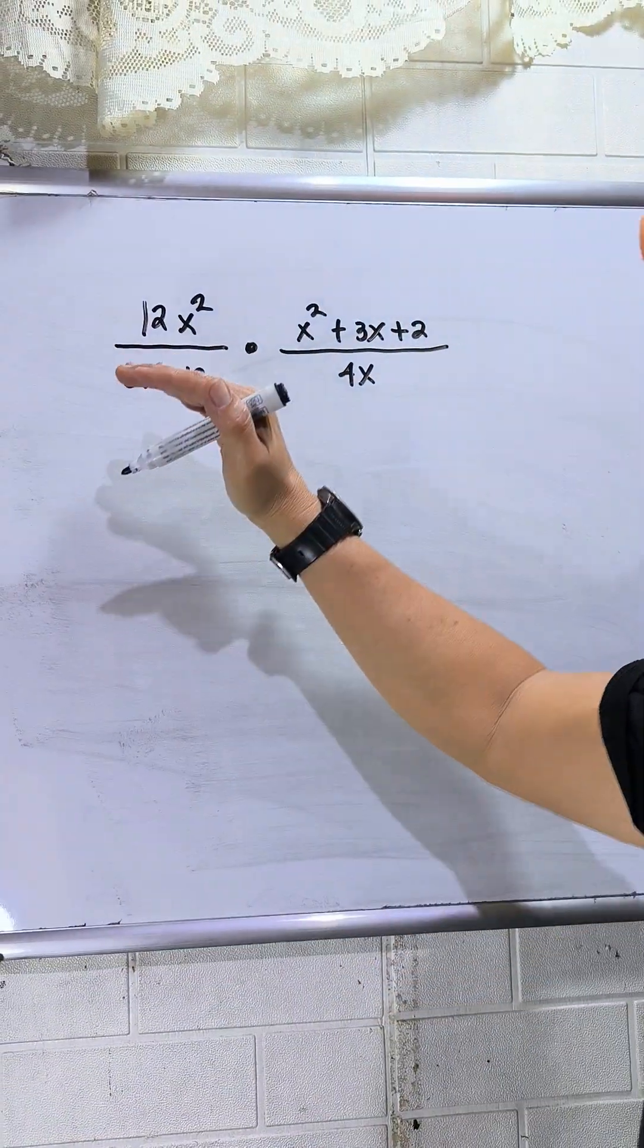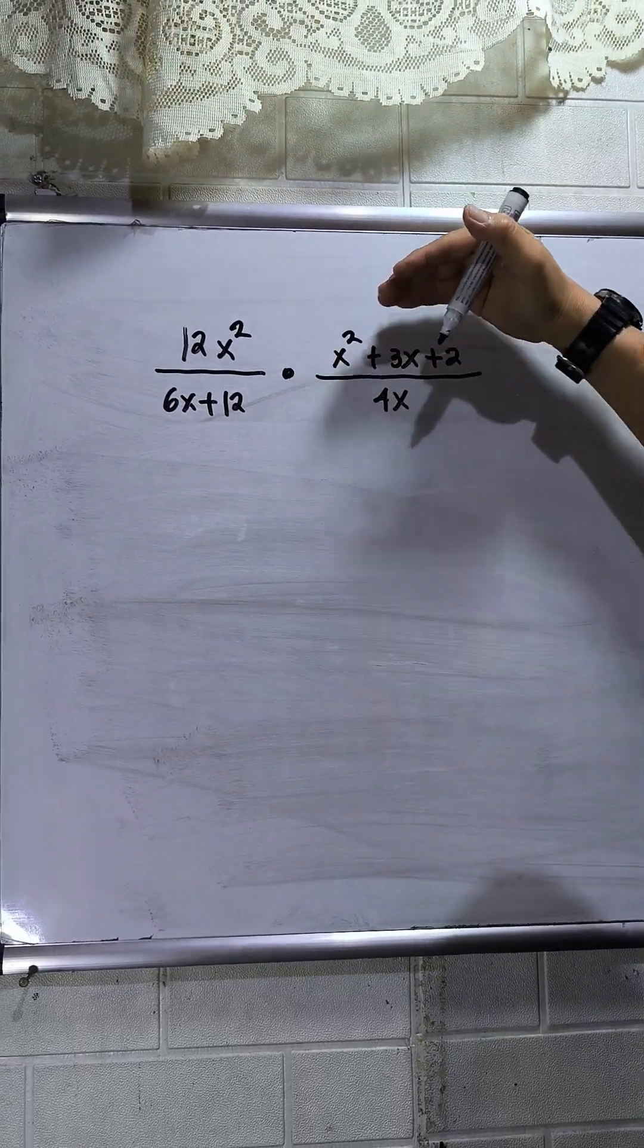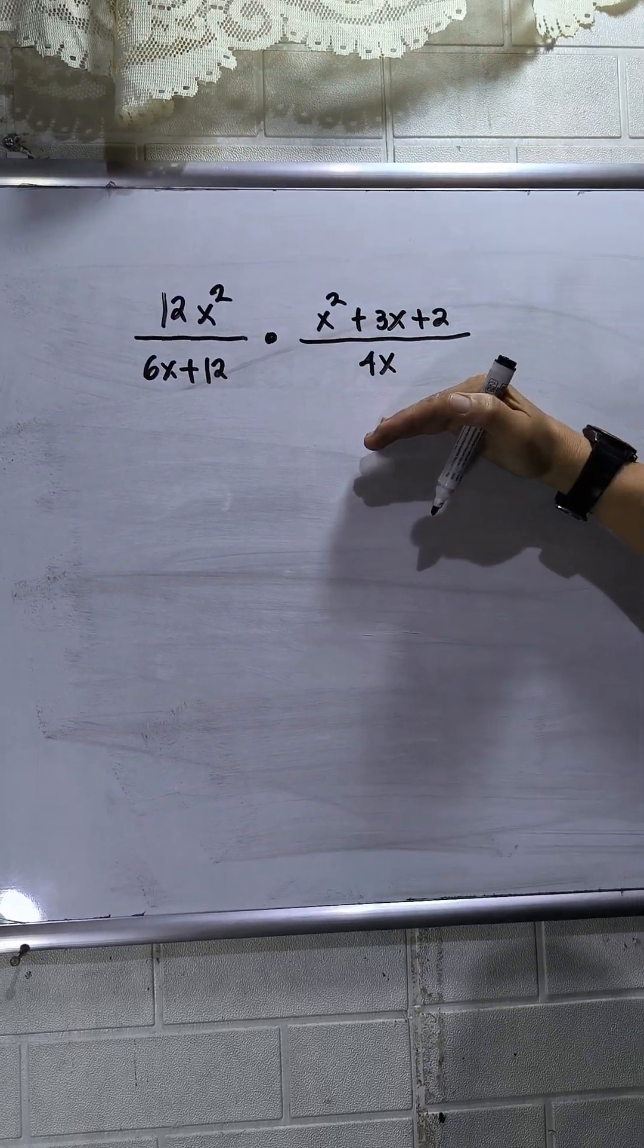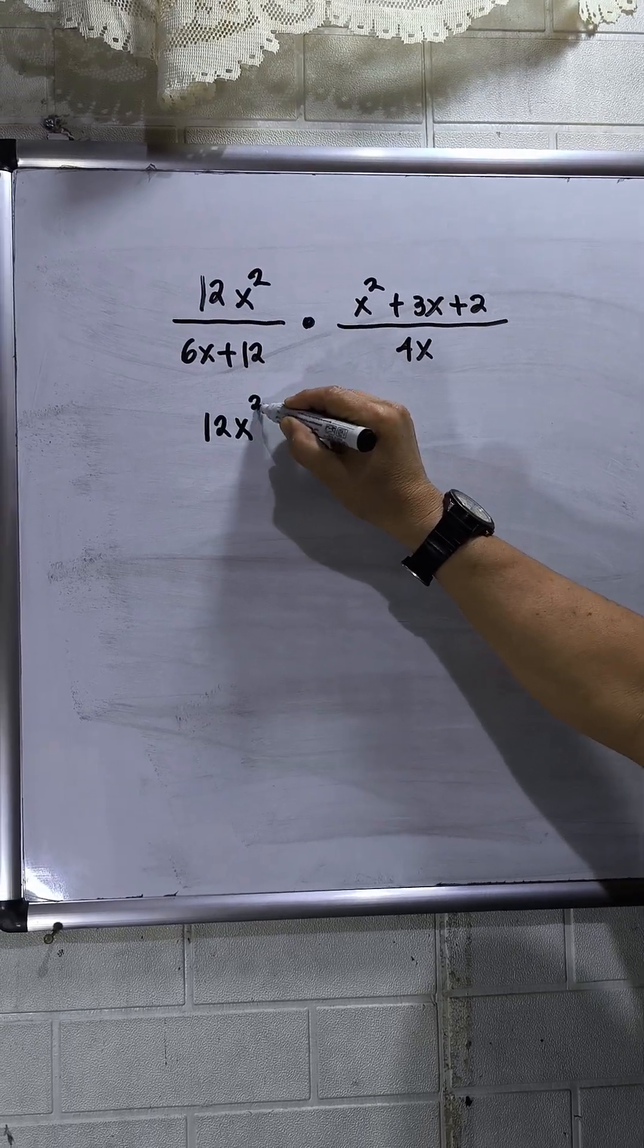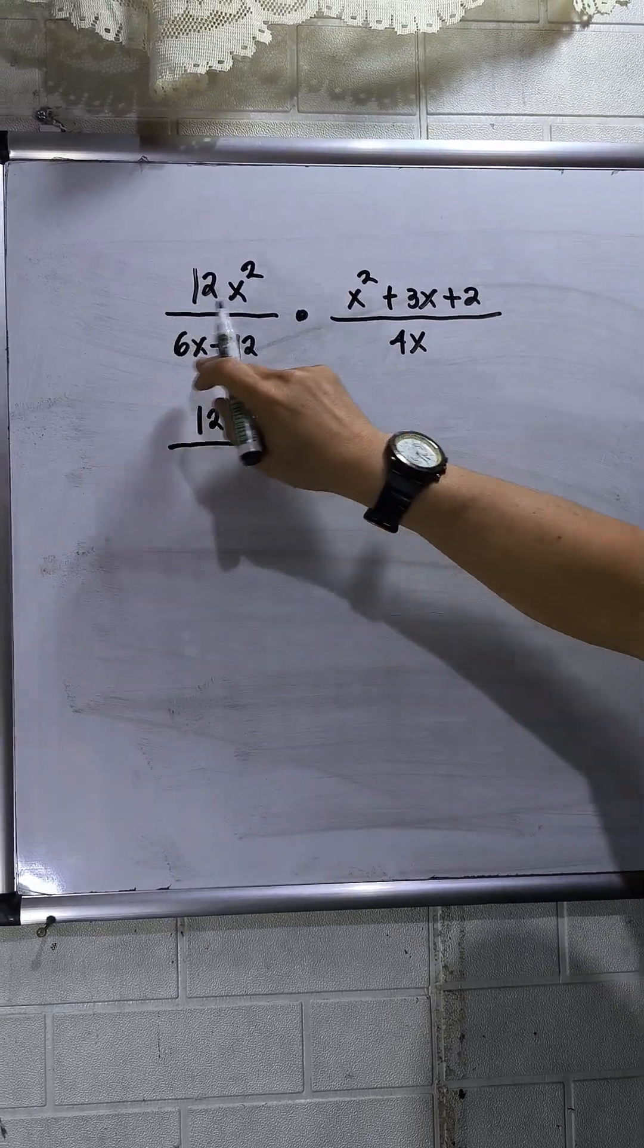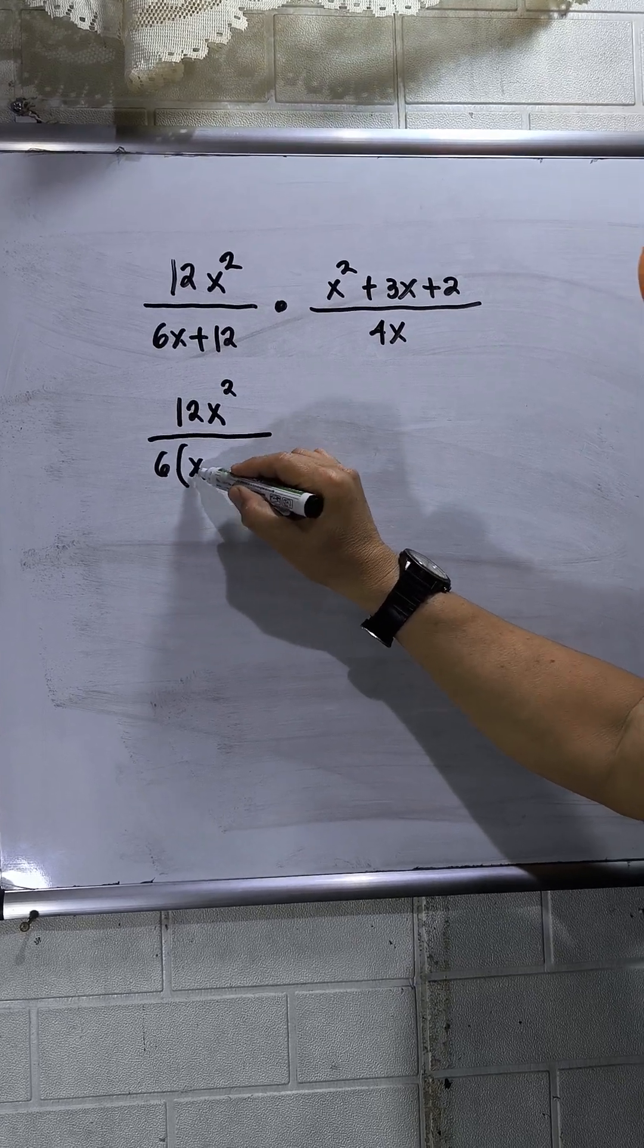So I have here 2x squared over 6x plus 12 times x squared plus 3x plus 2 over 4x. I will copy first the numerator, 12x squared, and then I will factor out the denominator. The common factor is 6, so this will be 6 times x plus 2.